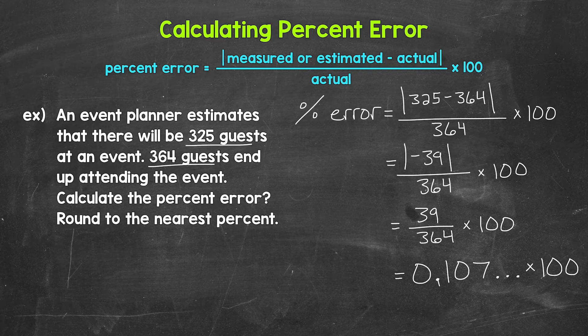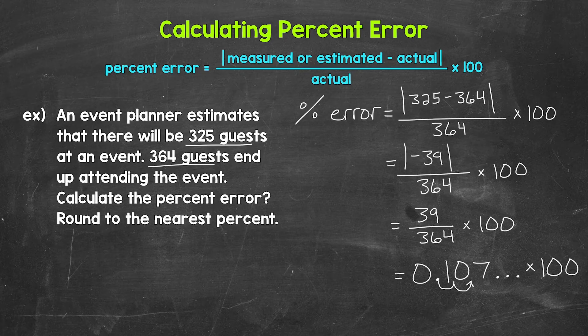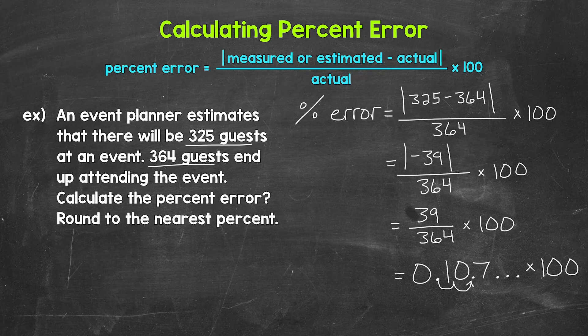So we need to move the decimal once, twice, to the right. That gives us 10.7 and again that decimal continues on.